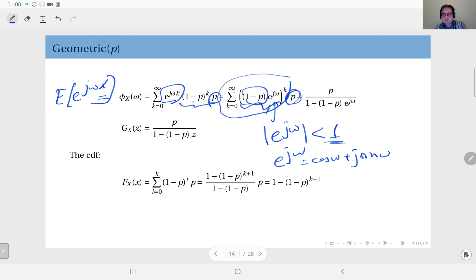That's the characteristic function. And of course, again, since the support is natural numbers, I can just replace the term e to the power jω by a z to obtain the generating function, which is given by p divided by 1 minus 1 minus p times z.